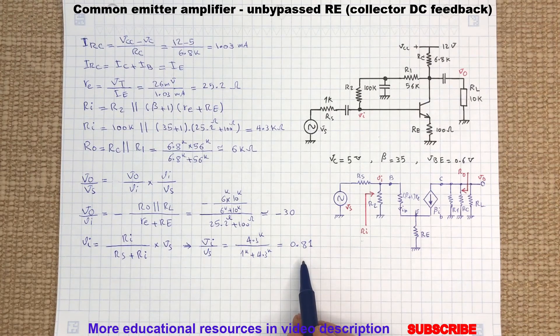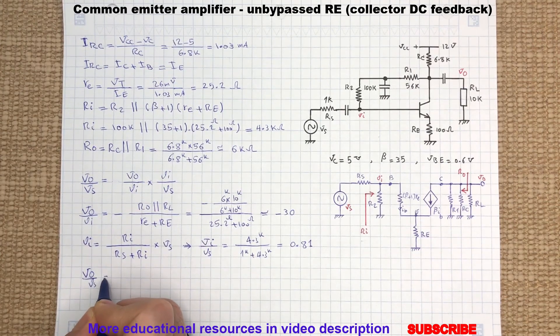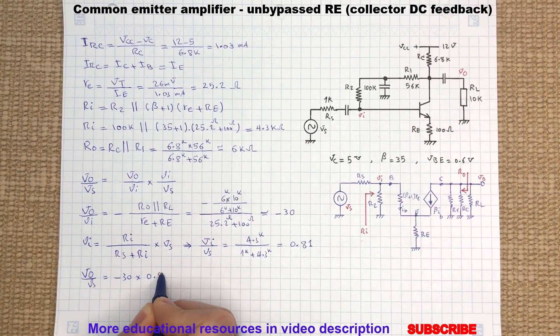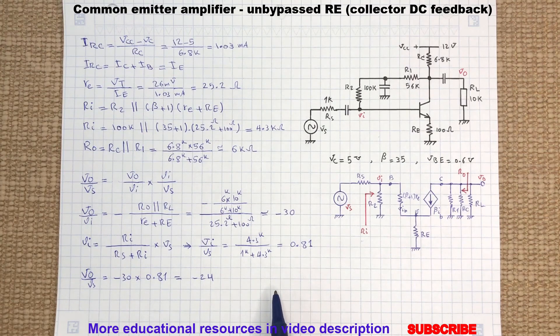So the RS will reduce the signal gain. Therefore we can find the circuit overall gain as follows. I hope you enjoyed watching this video.